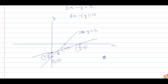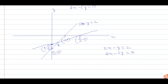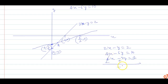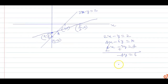Equation 1 is 2x minus y equals 2, and Equation 2 is 4x minus 6y equals 10. Multiply Equation 1 by 2, so it becomes 4x minus 2y equals 4. Subtracting from Equation 2, this gives minus 4y equals 6, so y equals minus 3/2.